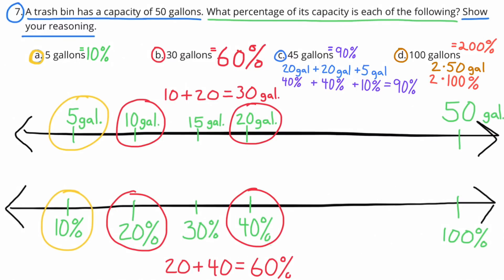D. 100 gallons. Well 100 gallons is twice the capacity of a 50 gallon trash bin. So 2 times 50 equals 100 gallons. And 2 times 100% equals 200%. So 100 gallons would be 200% of a 50 gallon trash bin.